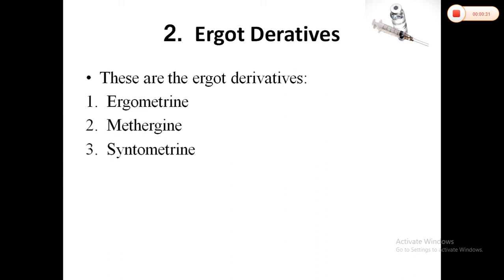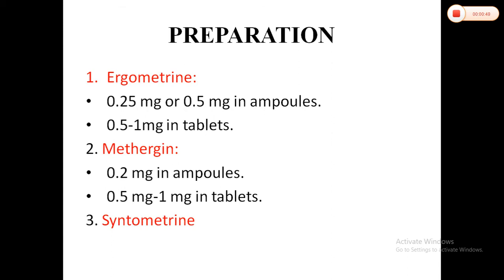Hello students, today I am going to discuss about ergo derivatives, which is a second category of oxytocics. In the last class I discussed oxytocin. Ergo derivatives are classified into three parts: ergometrine, methergine, and citometrine. Preparation: ergometrine is available as 0.25 mg or 0.5 mg in ampoules, and 0.5 mg in tablet form.